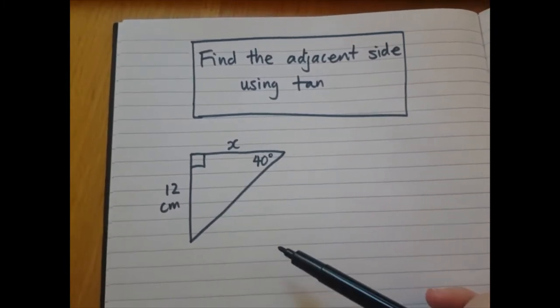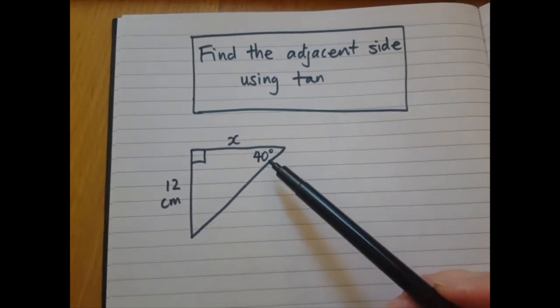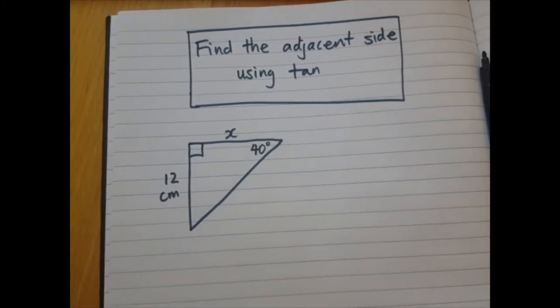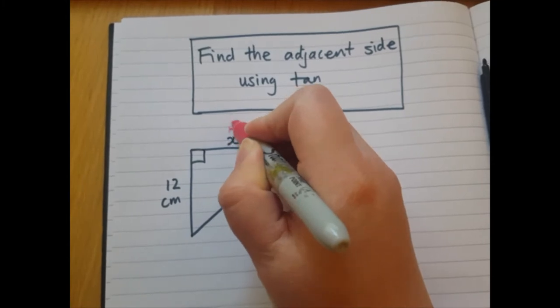So here's my triangle. This is the angle I'm interested in. It's 40 degrees. Next to this angle is the side x, so that's the adjacent side. I'm going to label it A for adjacent.